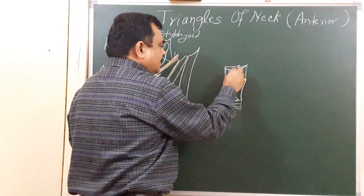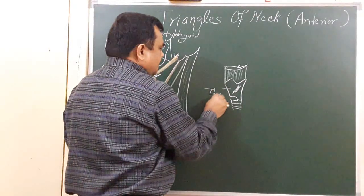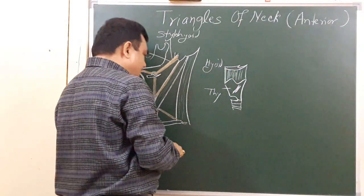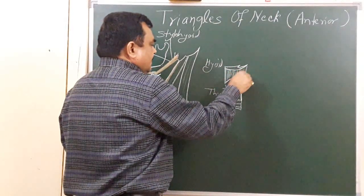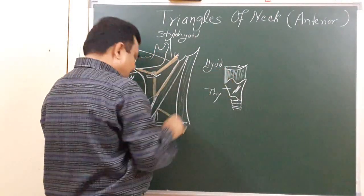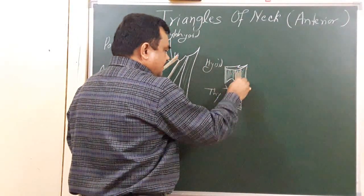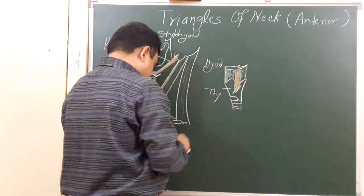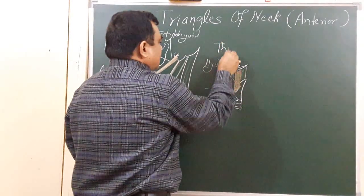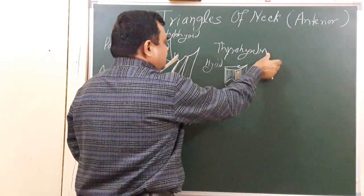This cartilage is the thyroid cartilage. This membrane is the thyrohyoid membrane, which anteriorly becomes thickened to form the thyrohyoid ligament. A muscle extends from the hyoid bone to the thyroid cartilage — this muscle is the thyrohyoid muscle.